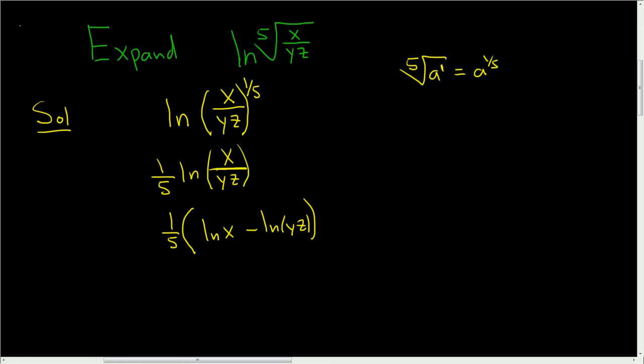And the reason we need parentheses is because they're actually already there. But this is one term, but now it's becoming two terms. So we will have to distribute the one-fifth at some point. Let's go ahead and do that. So this is one-fifth ln x minus one-fifth natural log of yz.